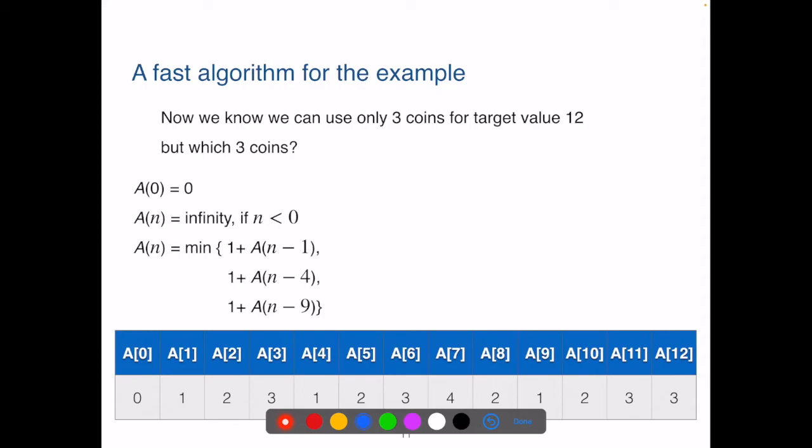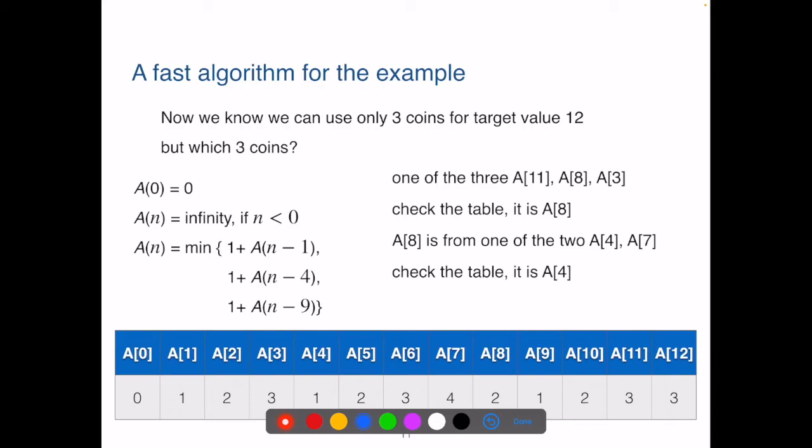You may wonder now, do we know which 3 coins? Now let's find out. You can use this table and trace back. To compute A(12), we examine 3 sub-problems: A(11), A(8), and A(3). We check the table and know that A(8) is the smallest. So we know how we get to A(12). Then we look at A(8). Its computation is based on two options, A(4) and A(7), if we just ignore the negative inputs. We check the table again and see which one is smaller. That'll be A(4). Last we look at A(4). The options are A(3) and A(0). We check the table and know that A(0) is smaller.